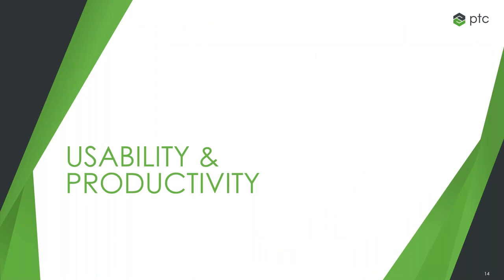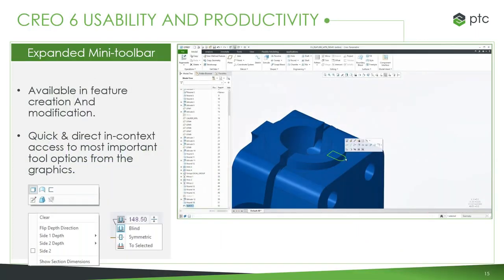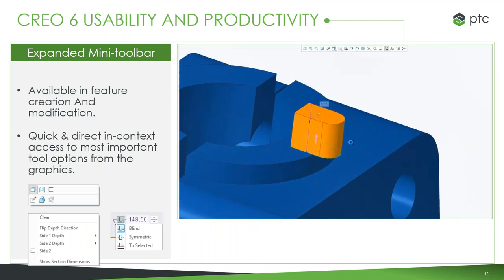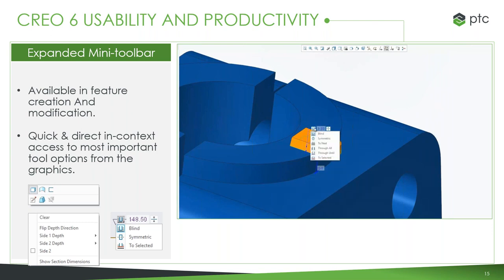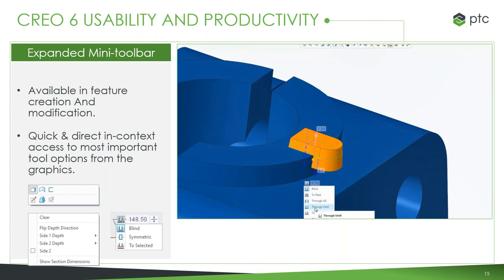We've done a lot when it comes to usability, productivity, and general enhancements to base Creo. As we've been doing with past releases, we've continued to build out the functionality of the mini toolbar. It's now available in creation and modification contexts, and works intelligently in context with whatever you're doing — lessening the need to click around and search for what you need. Any time you make a move, you get quick and direct options for exactly what you need to use.